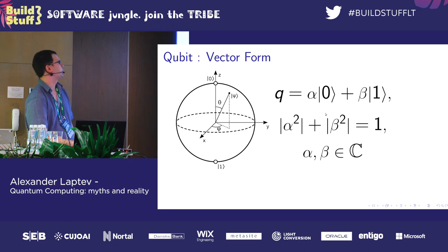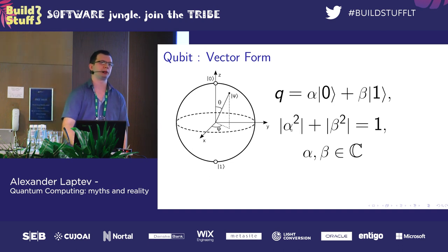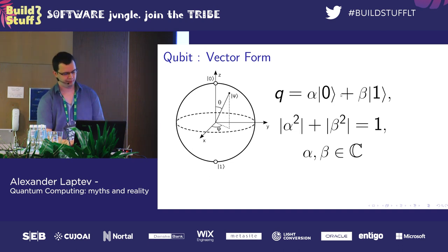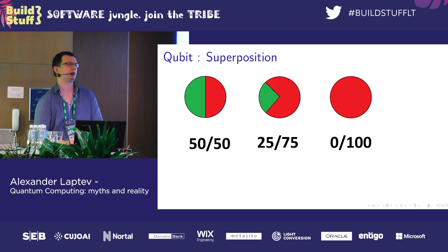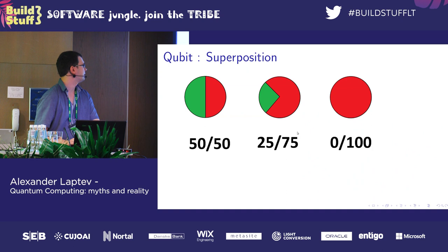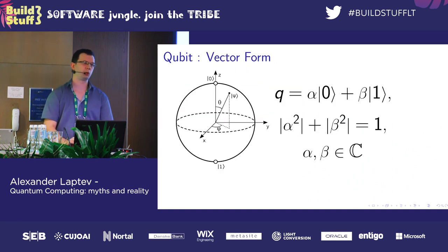This state, where both values can be measured with summed probabilities, is called superposition. The obvious rule is that the sum of probabilities of measuring zero or one is 100%. We cannot measure two, we cannot measure 42 — it's always zero or one.